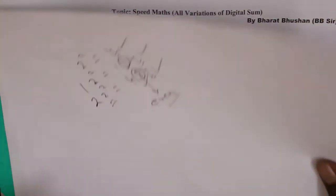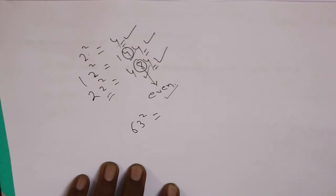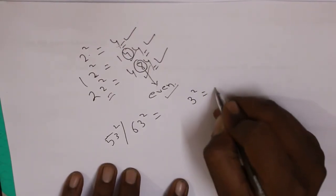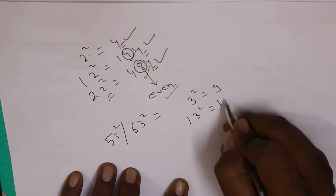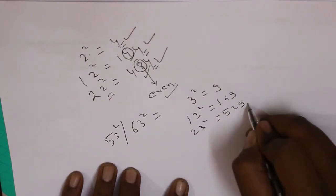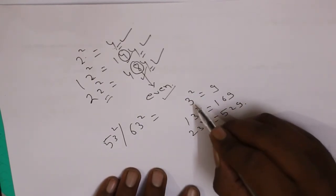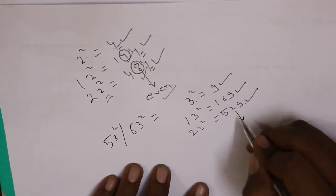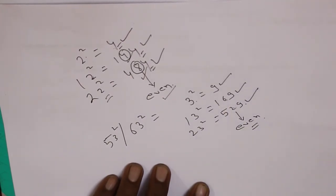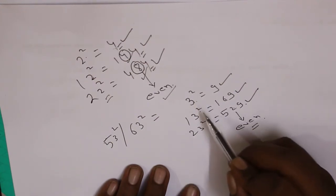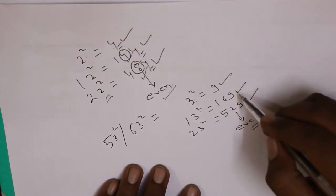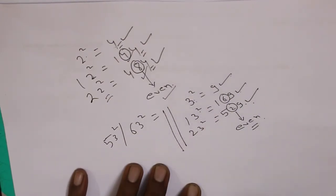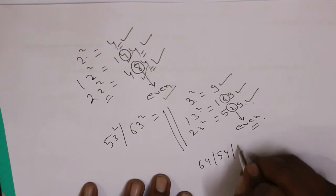Similarly, suppose you need to find 63 square or 53 square and a tie-breaking rule arises. 3 ka square is 9; 13 ka square is 169; 23 ka square is 529. So for any number with unit digit 3, its square ends in 9, and the second last digit is even — 2 is even, 6 is even. So if a number ends in 3, its square will always end in 9 and the second last digit will be even.